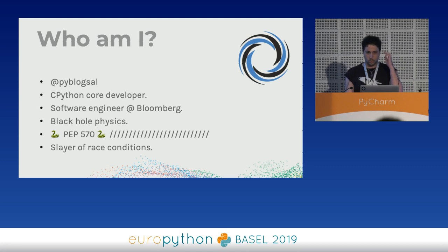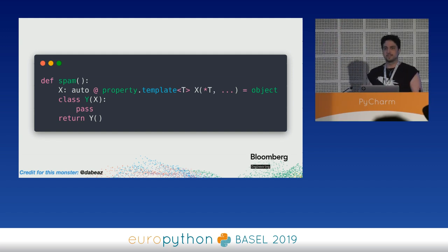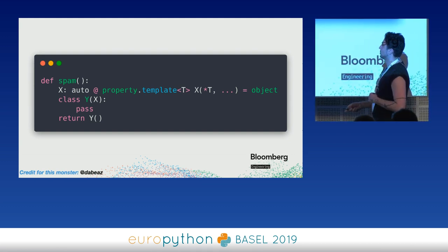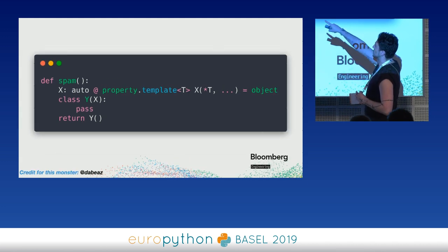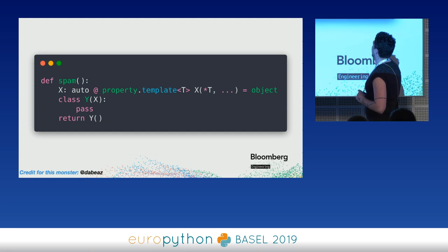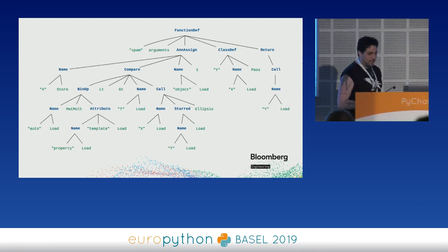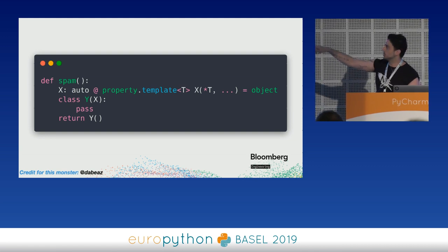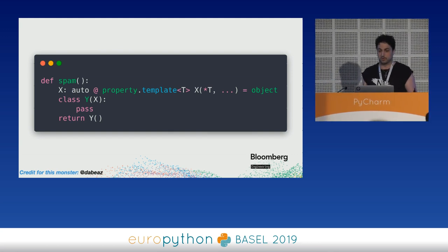Let's start with a cool question. Who thinks this is valid Python code? Raise your hand if you think it's valid. Raise your hand if you think it's invalid. This is actually valid Python code. This X is a type annotation. Property is just property. This T that seems like a C++ template is actually saying property.template is less than T bigger than X. That's an unpacking, that's an ellipsis, and that's object, and then that's a class. This is actually the AST of that expression. The parser parses this thing, and if you type this and call spam, it actually returns, because the annotation is not executed - you can run it, it's not a problem.